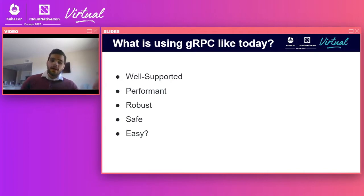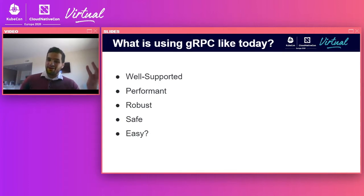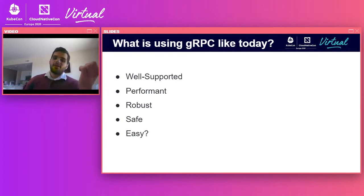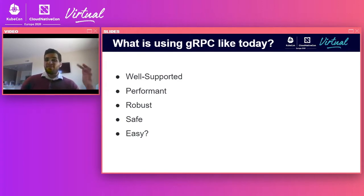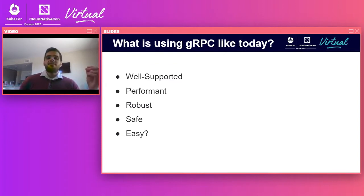We hear that it's robust — we once got a bug report for a server that crashed after a year of serving. We fixed the bug, but we learned that we were down to once-a-year sorts of bugs in the stack. And they say that it's safe. The interface definition language provided by protobufs helps save you from accidentally sending a malformed request to the server. It's like using a statically typed language after being forced to use an untyped language forever.